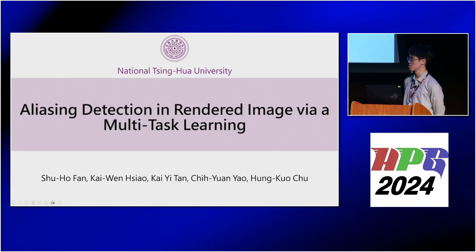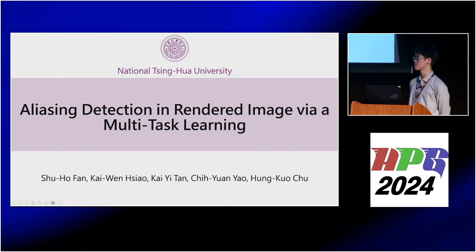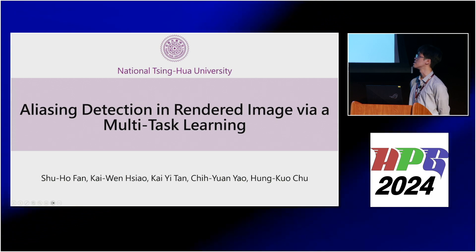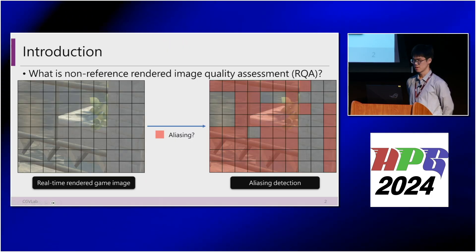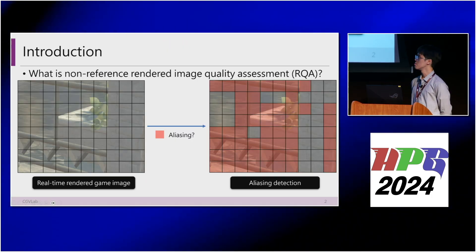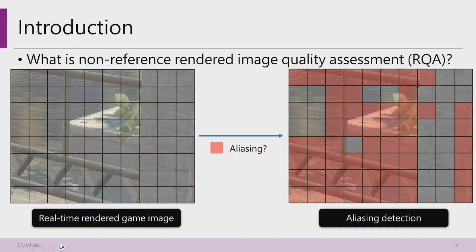I'm Su Ho Fan, and let me introduce my work: Aliasing Detection in Rendered Image via Multitask Learning. Given a rendered image, we can tell its quality through aliasing detection without needing a reference image. This process is known as Non-reference Rendered Quality Assessment, or non-reference RQA.